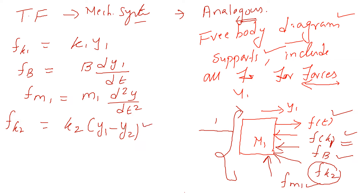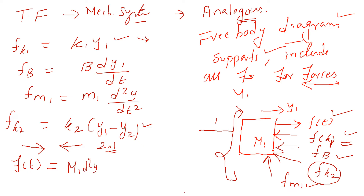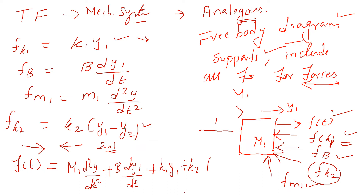Fk2 is treated differently because K2 connects two masses. Fk1 is fixed to the reference, so it is simpler. According to Newton's second law, the external force F(t) must equal the internal forces generated. So F(t) equals M1 d²y/dt² plus B dy1/dt plus K1·y1 plus K2·(y1 minus y2).